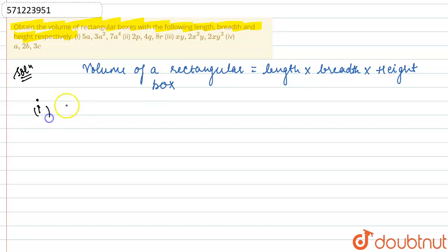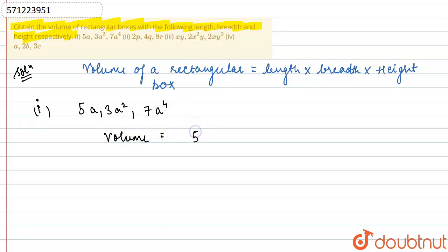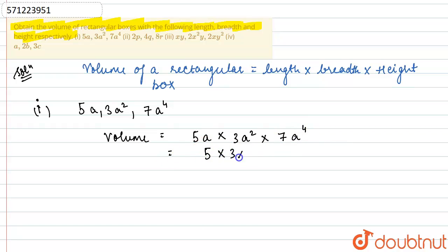The first part is: 5a, 3a², 7a⁴. Finding the volume, this will be equal to 5a multiplied by 3a² multiplied by 7a⁴. Now I'll write the like terms together, which is 5 × 3 × 7, and a × a² × a⁴.